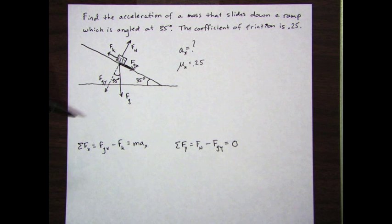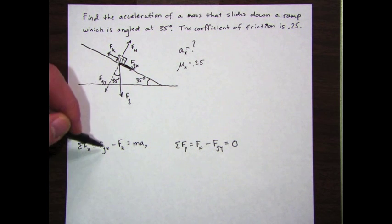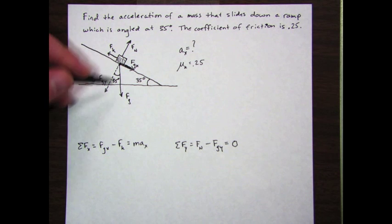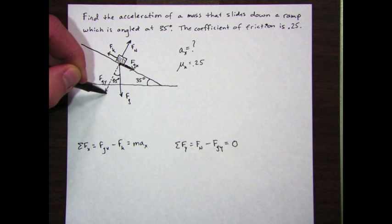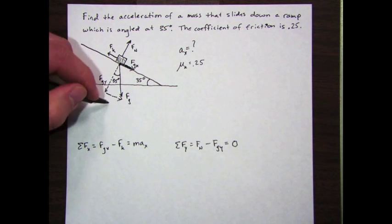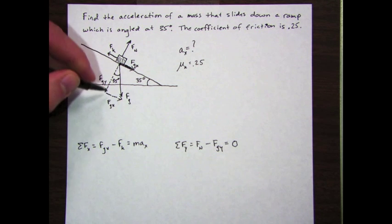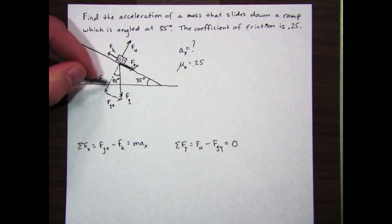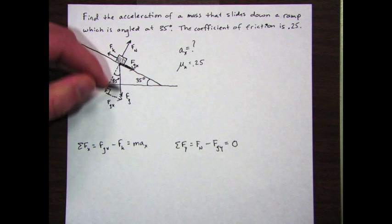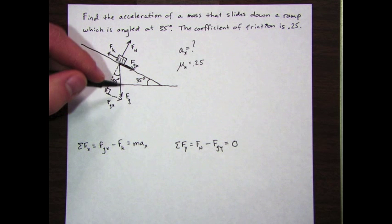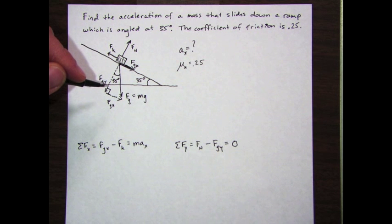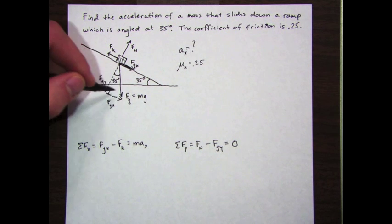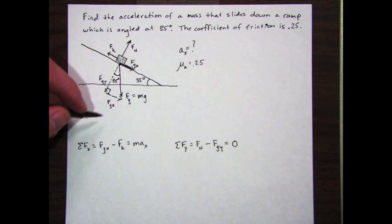For f g x I do need to know what that is. From the previous video we talked about what f g x equals. I'm going to take f g x and move it down here. Here's f g x, and what I have here is a right triangle where f g is the hypotenuse of that triangle. Well, f g equals mass times gravity.